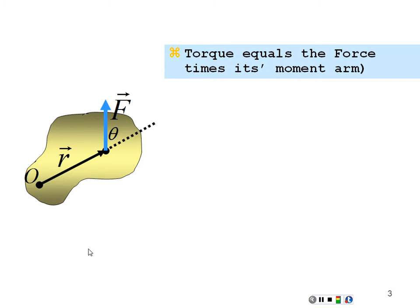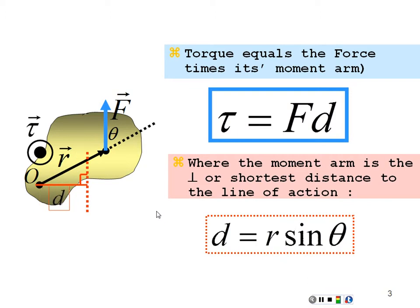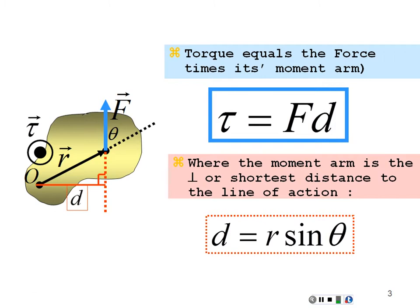Torque is also equal to the force times its moment arm. If we have a force and define its line of action, the torque equals the force times the moment arm, where the moment arm is the shortest distance to that line of action — so it's force times D. I have this force F, a line of action going infinitely along its length, and the shortest distance D from the axis to that line. Looking at the right triangle, with magnitude R as the hypotenuse, D equals R sine theta. So my torque has magnitude F times R sine theta, or F times D.